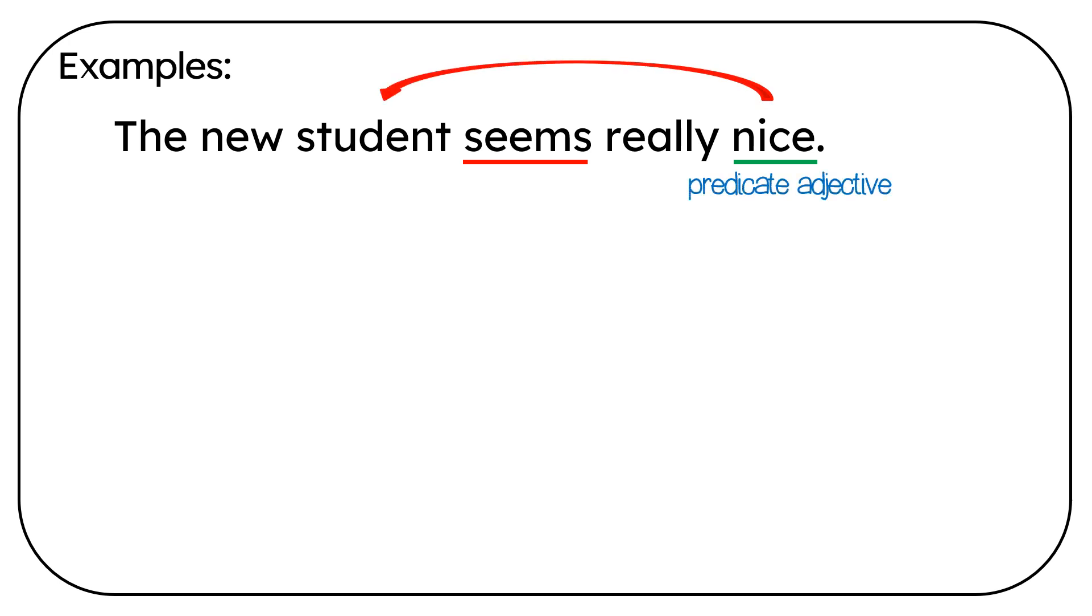Here are some more examples. The new student seems really nice. Seems is the linking verb. Nice is the predicate adjective. It's referring to student.